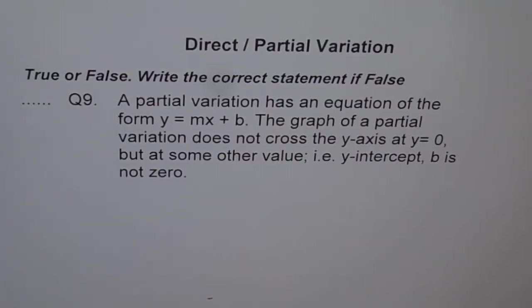Direct or partial variation, true or false? Write the correct statement if false. Question 9: A partial variation has an equation of the form y equals mx plus b. The graph of partial variation does not cross the y-axis at y equals 0, but at some other point, some other value. That is, y-intercept b is not 0.